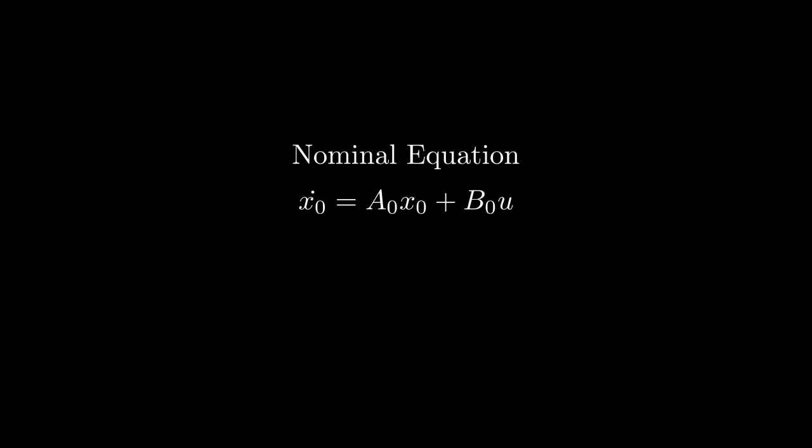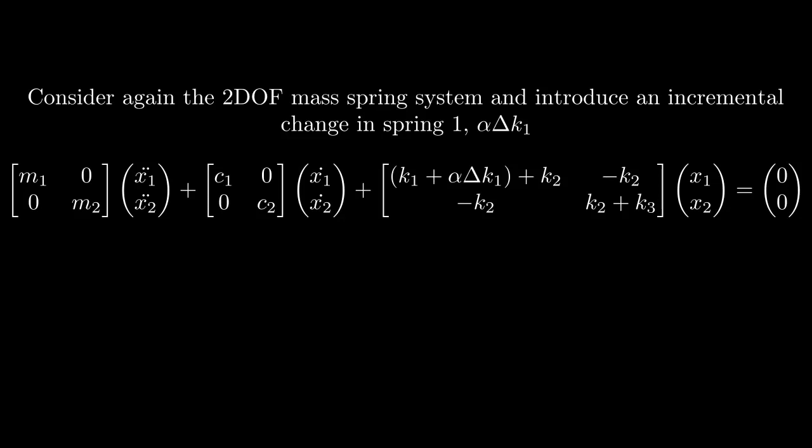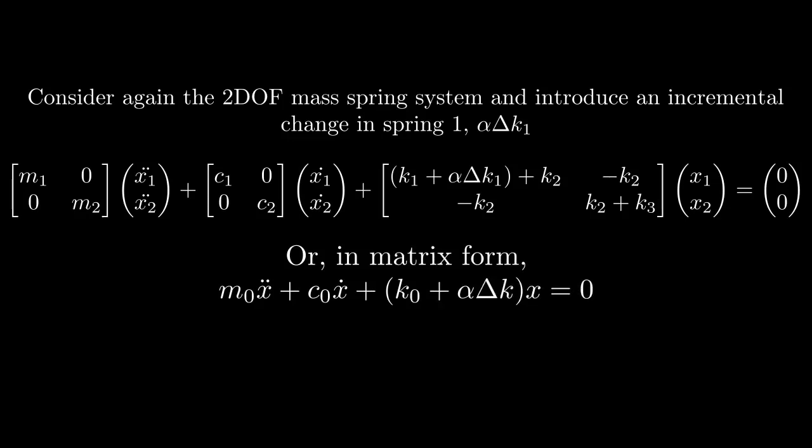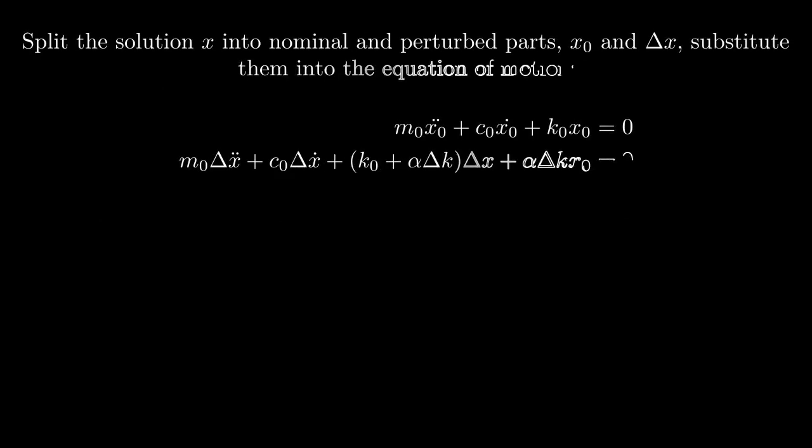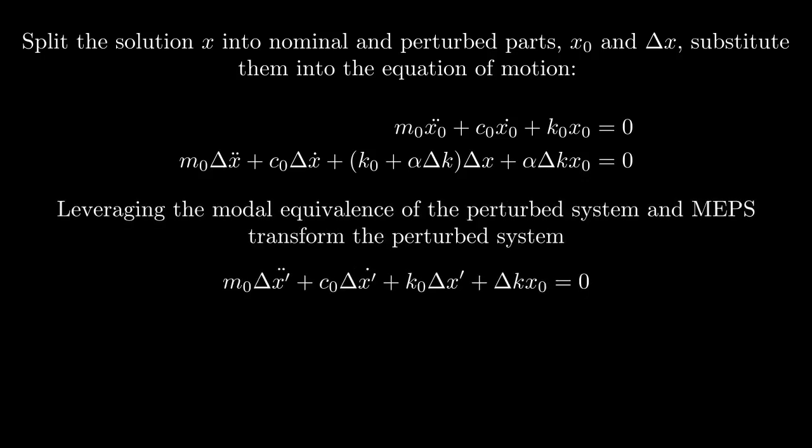Looking back at our system, we retain the same nominal equation for the fixed parameters, and having demonstrated the modal equivalence of T and T prime, we may exchange our perturbed system for the modally equivalent perturbed system, or MEPS. For the example of the 2 degree of freedom mass spring system, where we have introduced an incremental change in spring 1, we get this system of equations by summing forces on the masses. In matrix form, this may be represented compactly, with matrices M0 and C0 defined exactly as before, and K0 defined for the fixed parameters with the incremental change, alpha delta k. Splitting up the solution x into nominal and perturbed parts x0 and delta x, and substituting those into the equation of motion, we split up our system into a nominal equation and a perturbed equation. And we can transform our perturbed equation into a modally equivalent perturbed system, leveraging that modal equivalence principle.